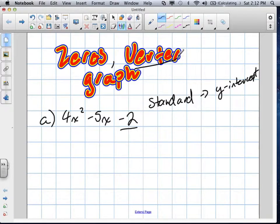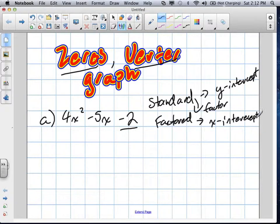To find the vertex we can... Oh sorry, actually, the first thing we want to do is find the zeros, which means we want to go to factored form. And in order to do that, we need to factor.